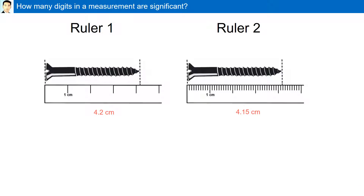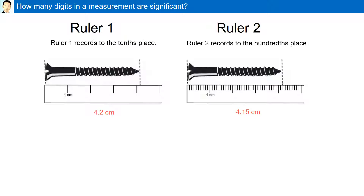How many digits in the measurement are significant? Here we have two rulers. Ruler 1 is measured to the tenths place — the screw is measured to 4.2 centimeters. While in ruler 2, it's measuring to the hundredths place: 4.15 centimeters.